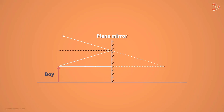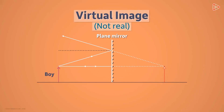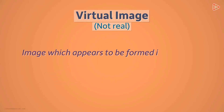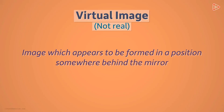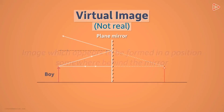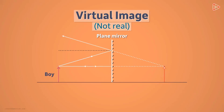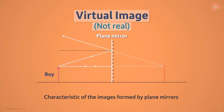We have the perception that the light rays are coming from a point behind the mirror — it is only our perception. So we say that the image formed here is virtual, or in other words, not real. A virtual image is an image which appears to be formed in a position somewhere behind the mirror, but in reality it isn't there. A virtual image is formed when the light rays diverge after reflection from the mirror. Every plane mirror forms a virtual image — this is the first characteristic of images formed by plane mirrors.